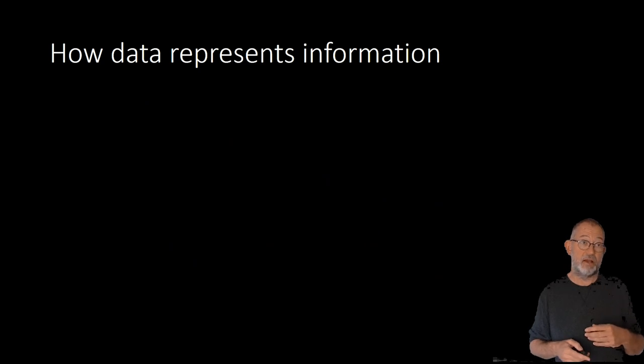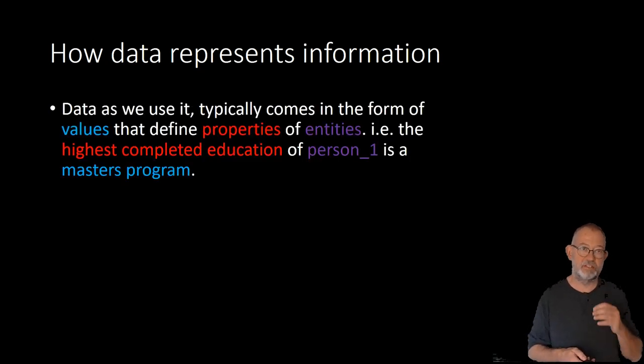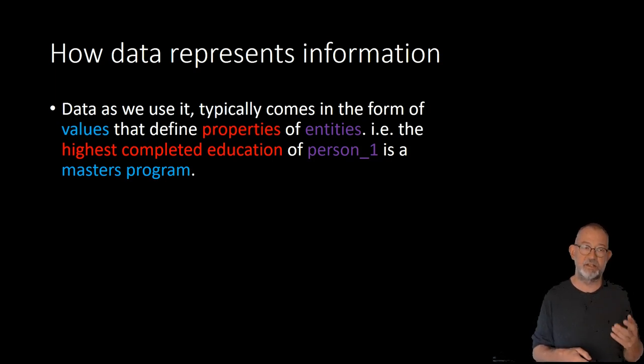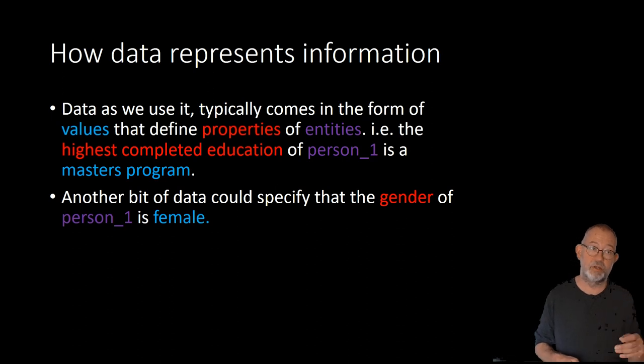Finally, if we look at how data represents information, it typically takes a form where we say that we have an entity. An entity is a thing in our world of discourse or the way that we see reality. An entity and these things, they have properties. So a building can have a height and so on. And these properties will have a value. So the height of the building is 10 meters. So, for instance, we could say that if we look at the property, the highest completed education of a person, then that might be a master's program. Also, the gender of person one, it has the value of female. So the red ones are the properties. The pink and mobile ones are the entities. And these light blue ones are the values of the properties.